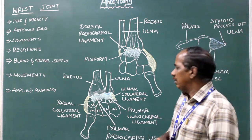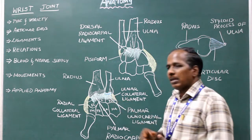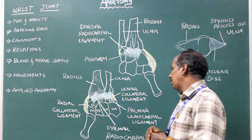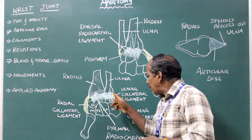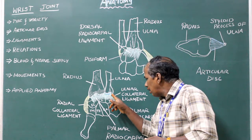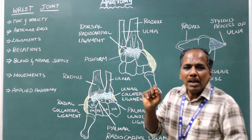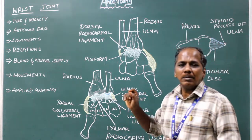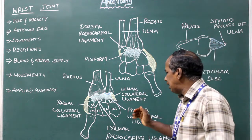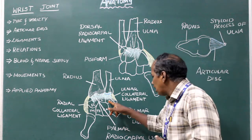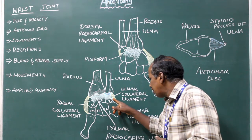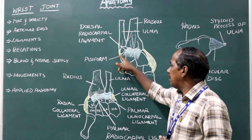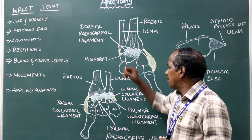Number 3: Ulnar collateral ligament or medial ligament of the wrist joint. Attachment: proximally it is attached to the tip of the styloid process of ulna. Distally it is attached to triquetral and pisiform bone.